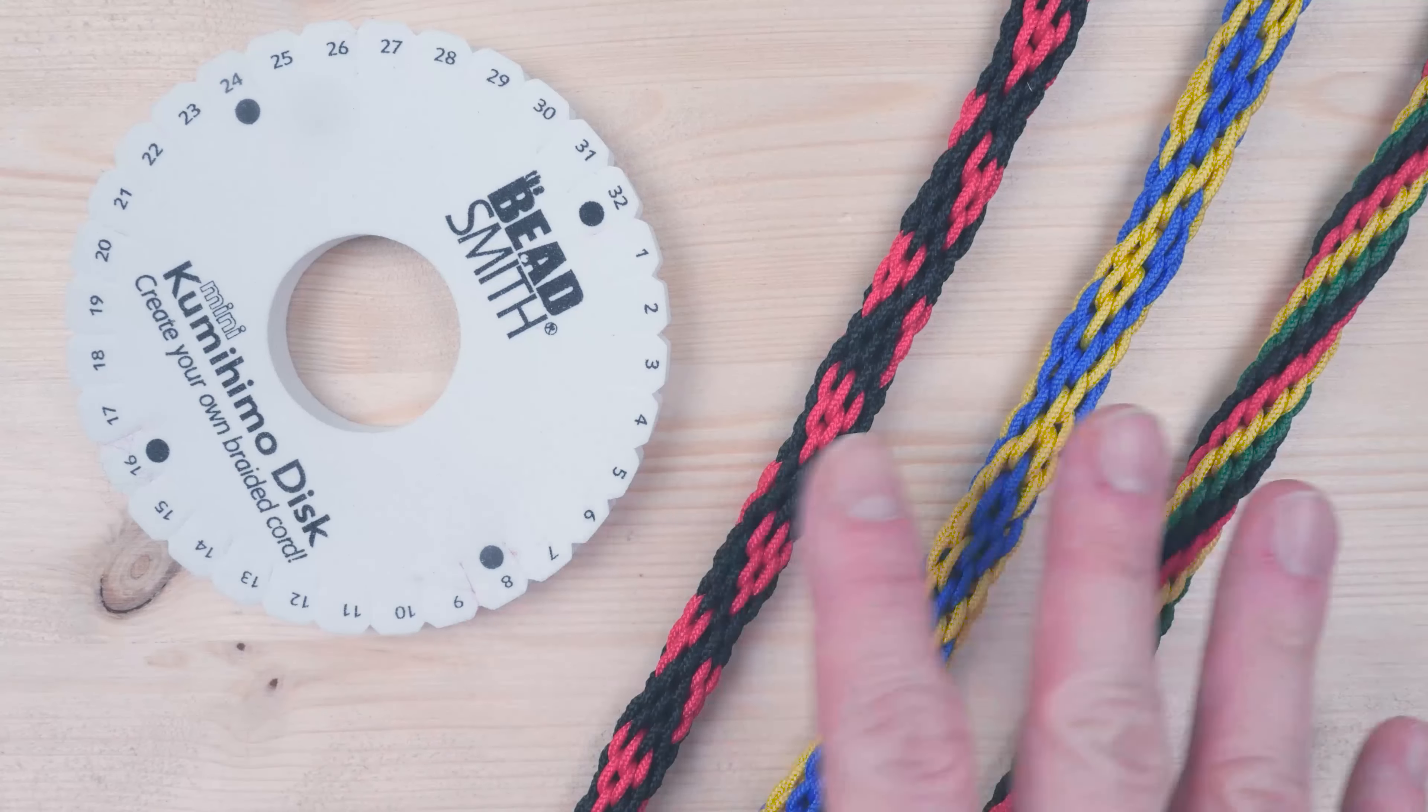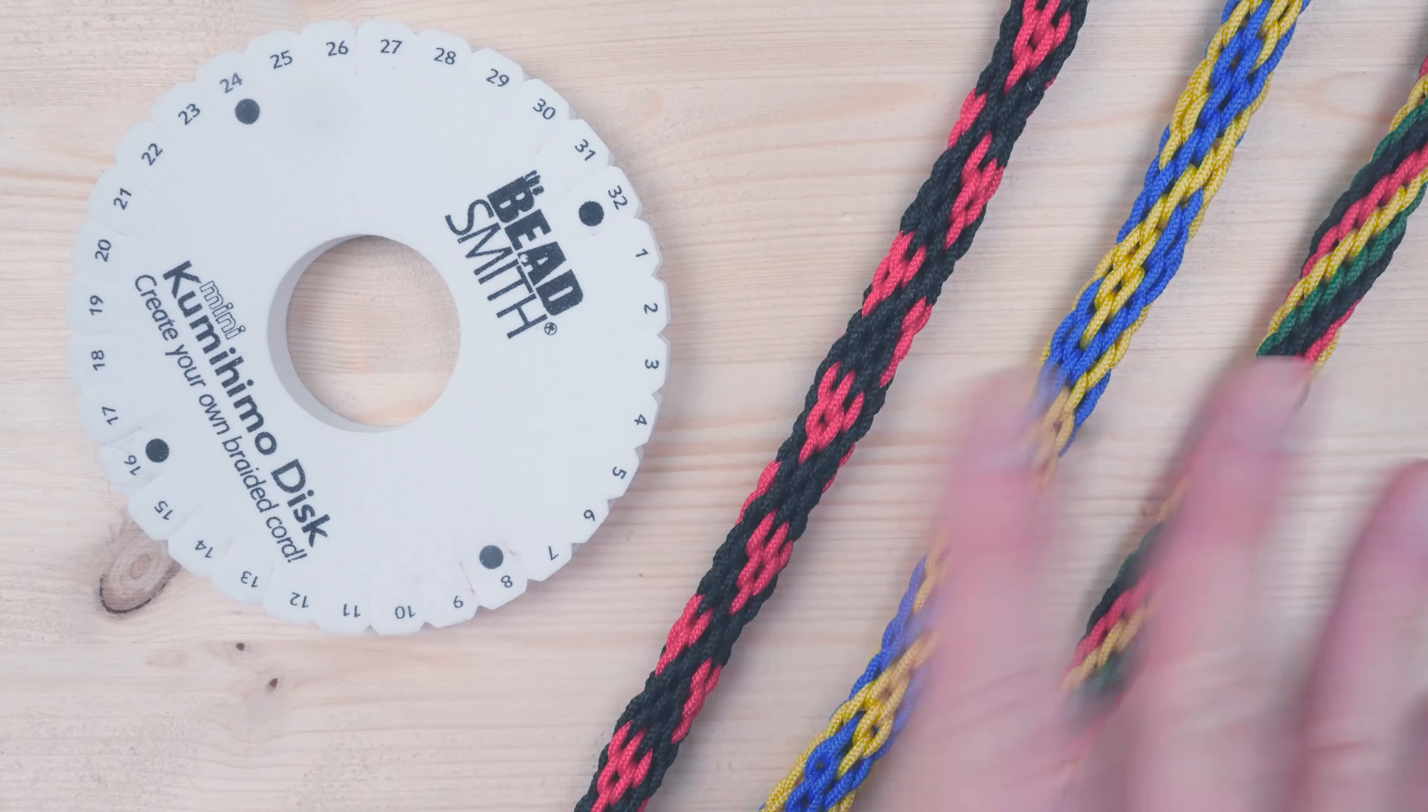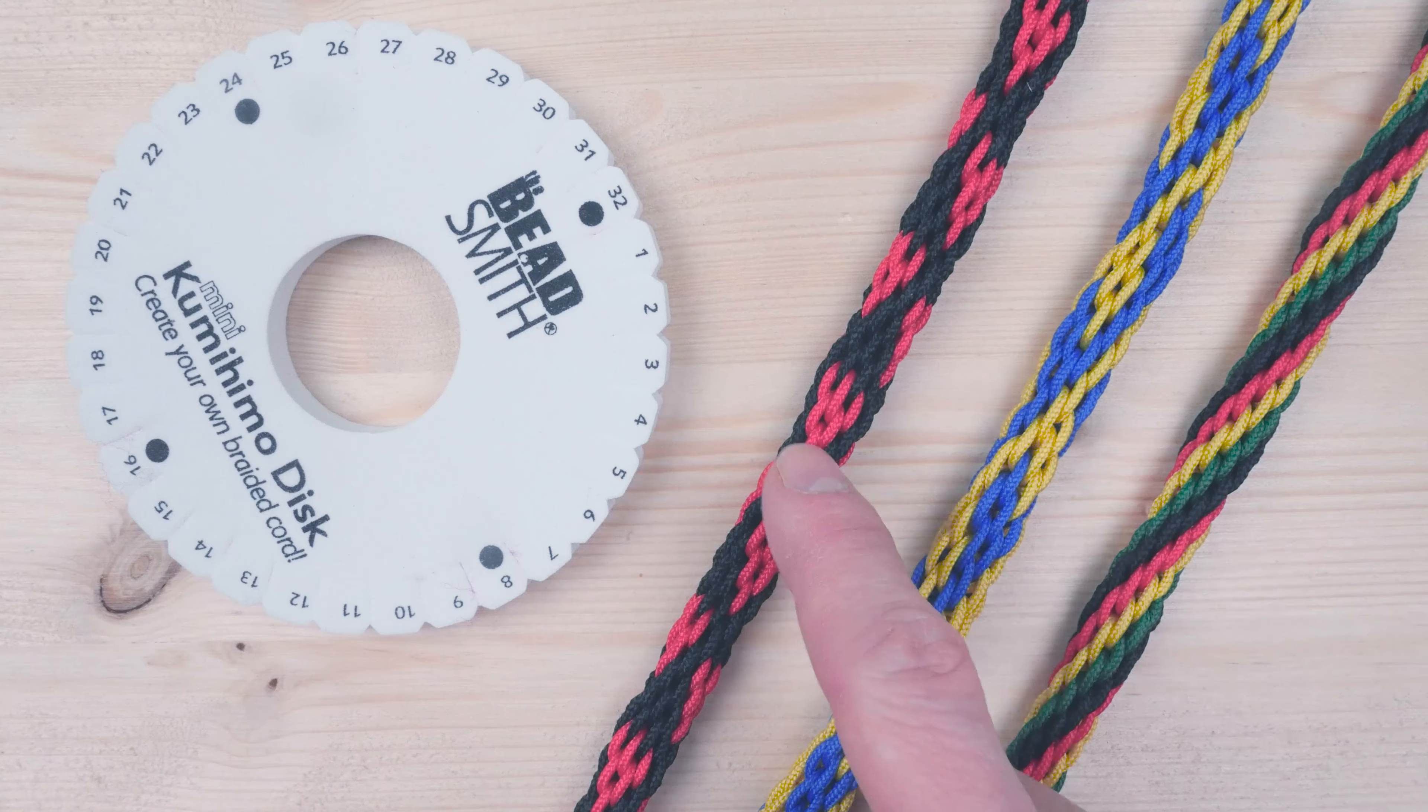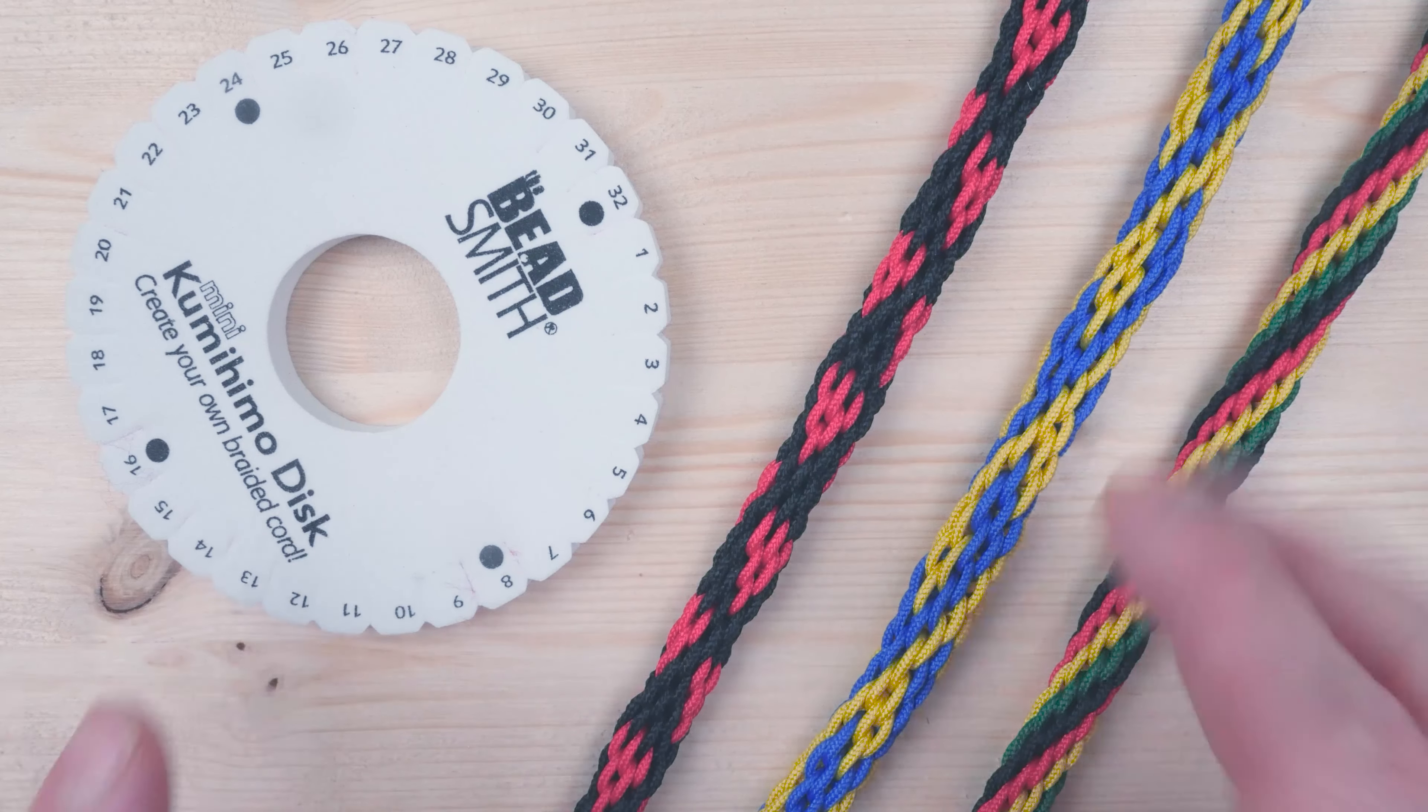The disc is used to create round braids in all sorts of patterns. So here I have a spiral pattern, a heart pattern, a dog tooth pattern and you have a ton of others to try out.